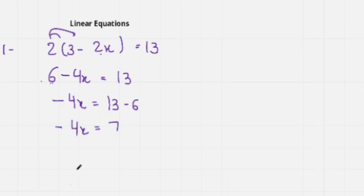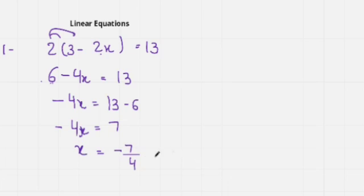So minus 4x equals 7. This minus 4 is multiplied with x, so on the other side it will be divided. I can write x equals minus 7 over 4, or in mixed number form: minus 1 and 3 over 4. This is our answer.